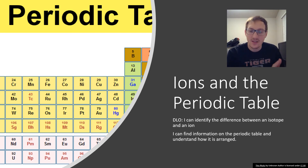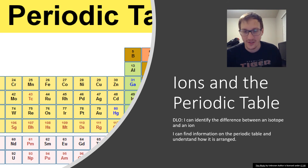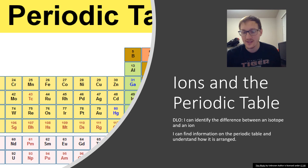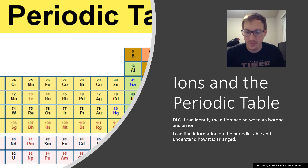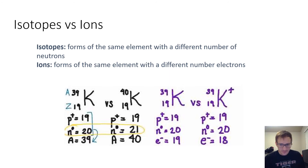We're moving on from isotopes — isotopes should have been the last thing you guys did — and we're going to be talking about ions and the periodic table. I apologize in advance; I've been sick, so if my voice sounds weird or I cough during this video, that's why. Our DLOs: first, I can identify the difference between an isotope and an ion, and second, we're going to talk about the periodic table and how it's arranged.